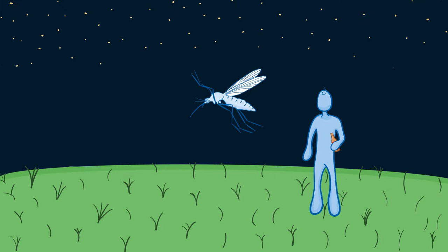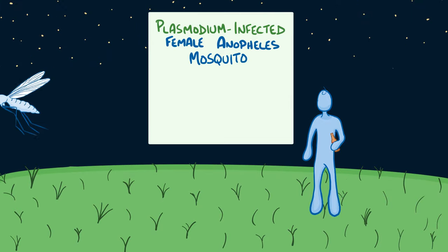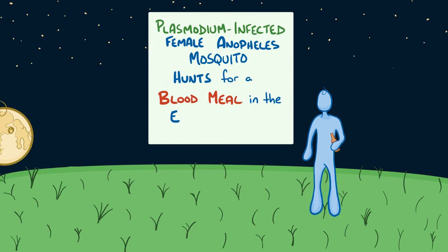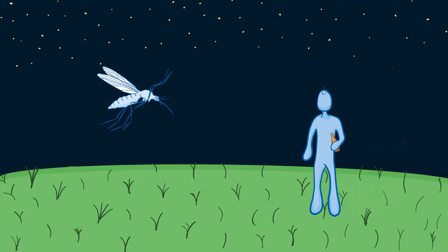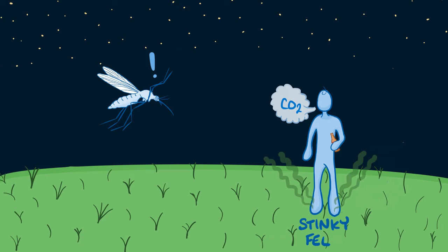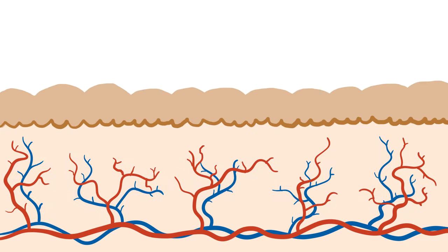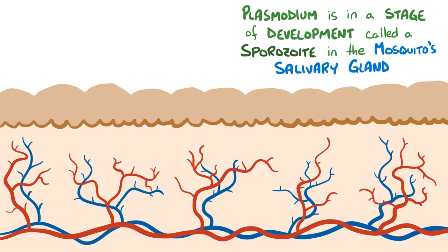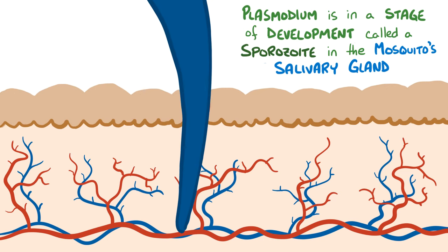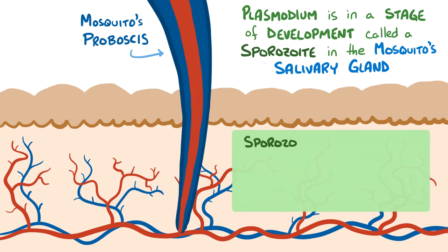Malaria starts when a plasmodium-infected female Anopheles mosquito hunts for a blood meal in the evening and through the night. Like a tiny flying vampire, the mosquito is drawn to carbon dioxide that gets breathed out as well as bodily smells, like foot odor. At this point, the plasmodium is in a stage of development called a sporozoite, waiting patiently in the mosquito's salivary gland. When the mosquito pierces a person's skin with its long, needle-shaped tusk called a proboscis, the tiny worm-like sporozoites spill out of the mosquito's saliva and make it into the bloodstream.